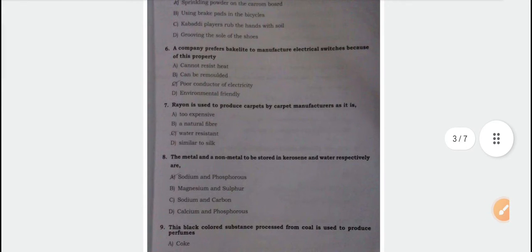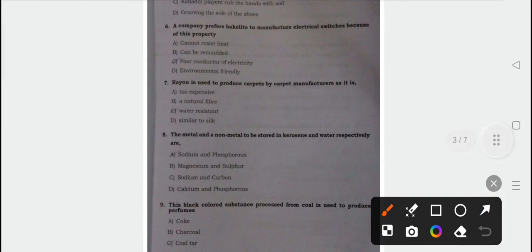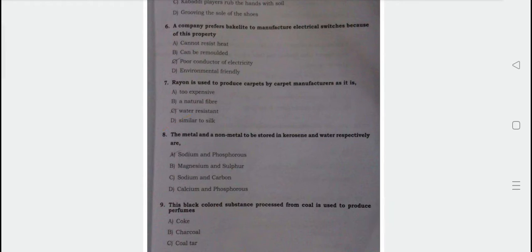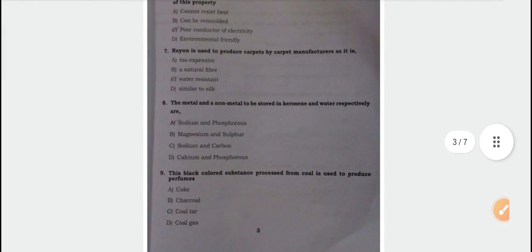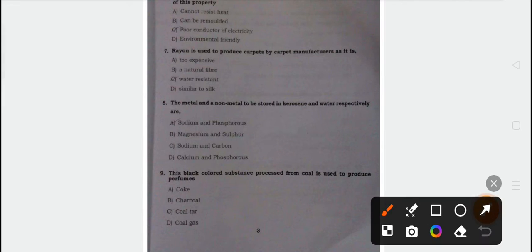Rayon is used to produce carpets by carpet manufacturer as it is, option D, similar to silk is the correct answer for question number seven. The metal and non-metal to be stored in kerosene and water respectively, the correct answer for question number eight is phosphorus and sodium.